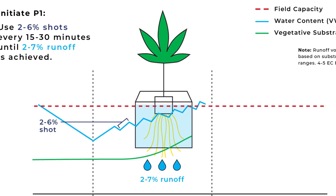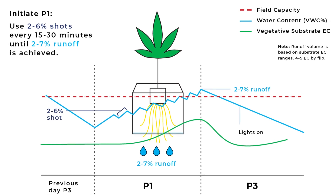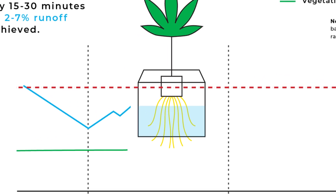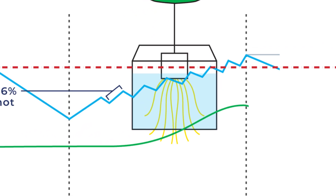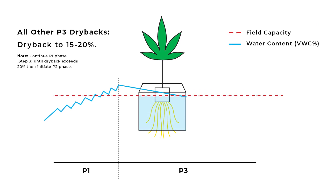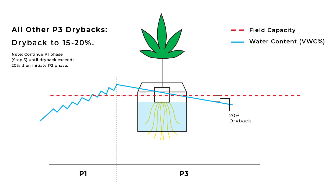We'll use as many two to six percent shots as are needed until field capacity is reached and we achieve two to seven percent runoff. Use a clone tray with an insert to collect runoff and determine volume. Mark your VWC percent at the exact point when we achieve two to seven percent runoff — this will be our target VWC percent, which will be important when planning our P2 irrigation phase. Each P1 shot must be spaced 15 to 30 minutes apart to slowly allow the nutrient solution to wick into the substrate and avoid channeling, which can occur if too large of a shot is applied at one time. After this first P1 irrigation event, we won't irrigate again until we see a 20% dryback in our substrate. A 20% dryback could take one to three days depending on substrate size, but eventually will begin to occur every day.